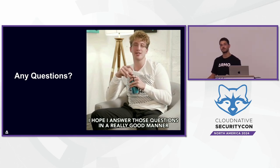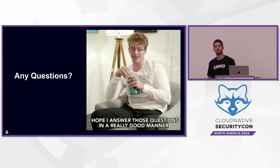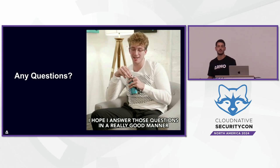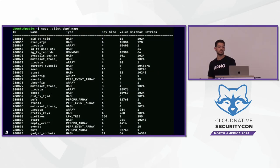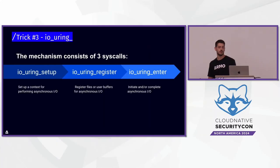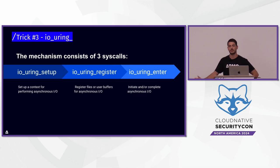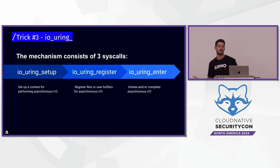Question about io_uring: is there a way to get visibility into that with eBPF? io_uring also relies on some system calls — those three system calls — so you can detect those. But it's a bit harder to detect io_uring because there is also legitimate use of io_uring. You will need to look at other contextual signals beyond just those system calls.